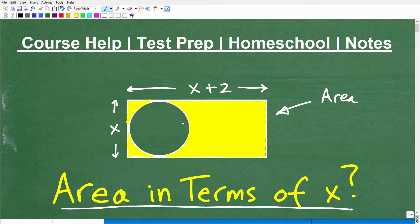It pretty much looks like a rectangle and a circle, but we don't have actual measurements like 8 inches or 5 centimeters. We just know that this side is X and this side is X plus 2.